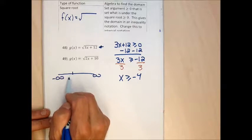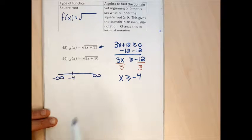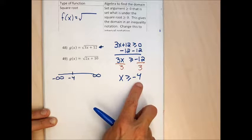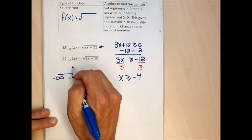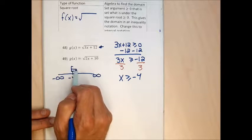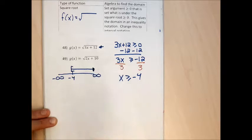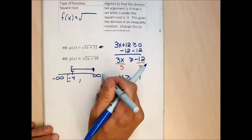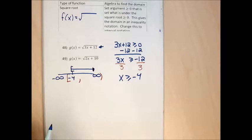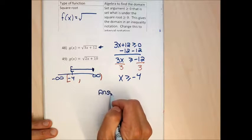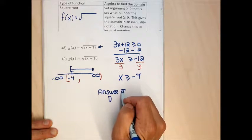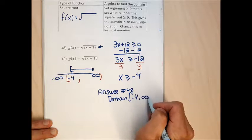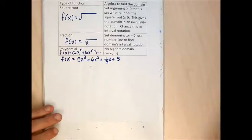I don't have to create a number line, but if I did, I'd place negative 4 with a square bracket because of the 'or equal to', and make an arrow pointing toward numbers bigger than negative 4. The interval starts at negative 4 with a square bracket and ends at infinity with a round bracket. The domain of number 48 is [-4, ∞).